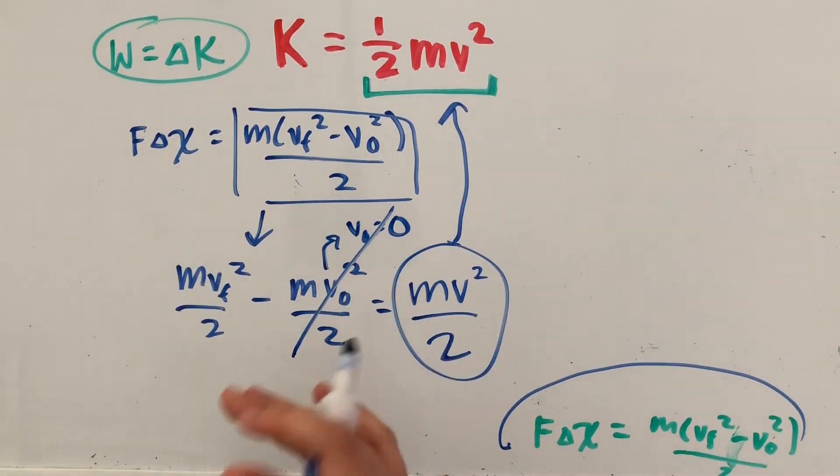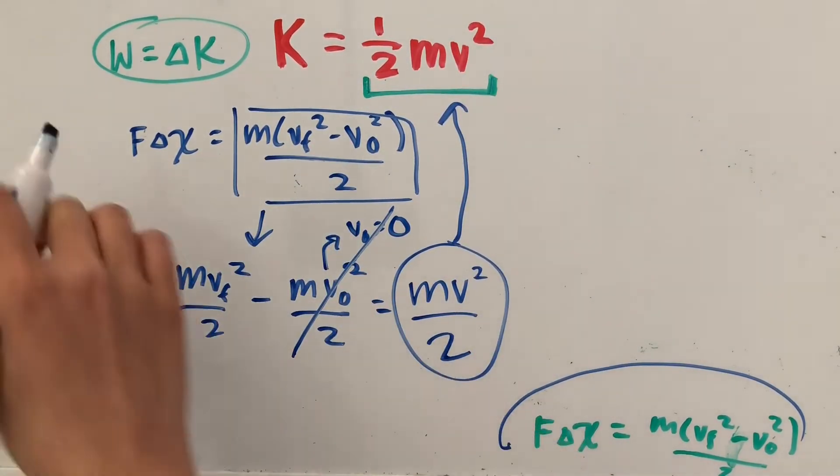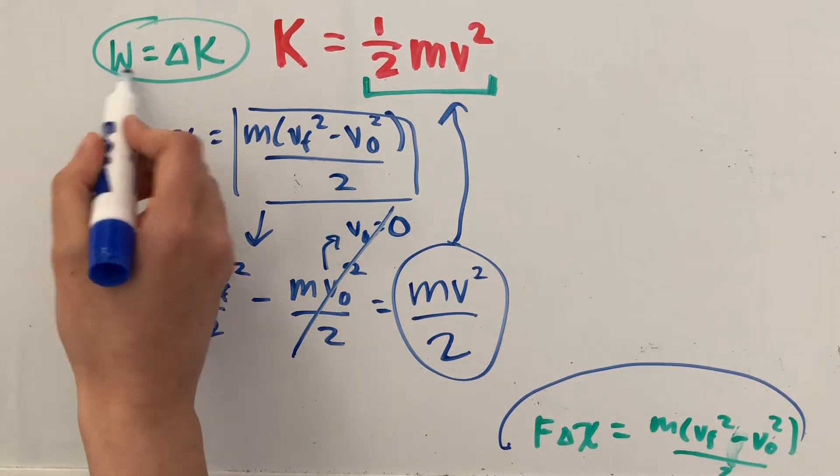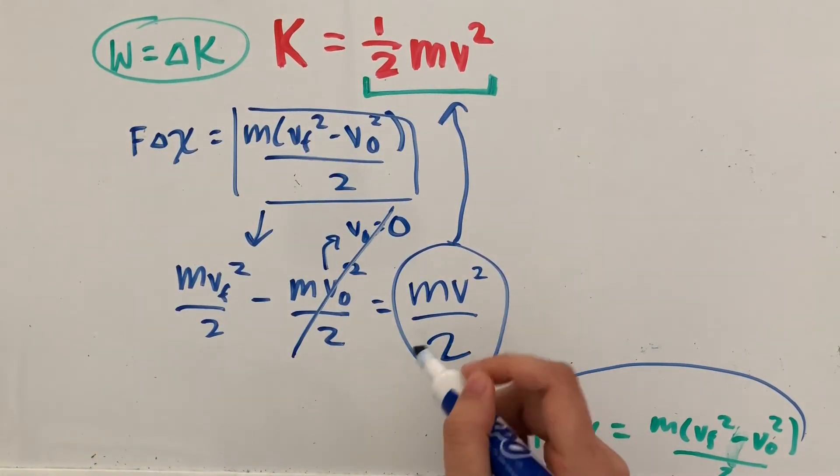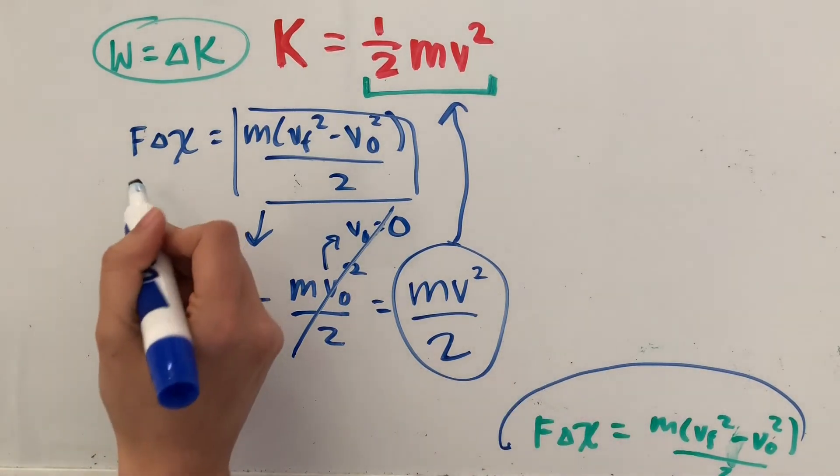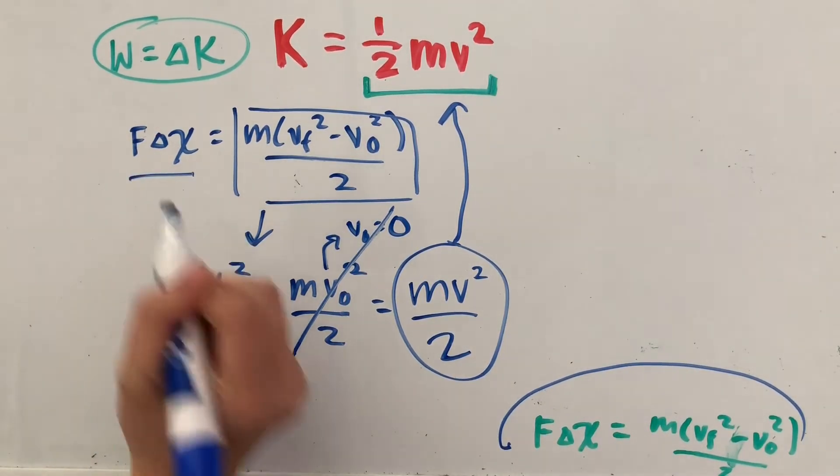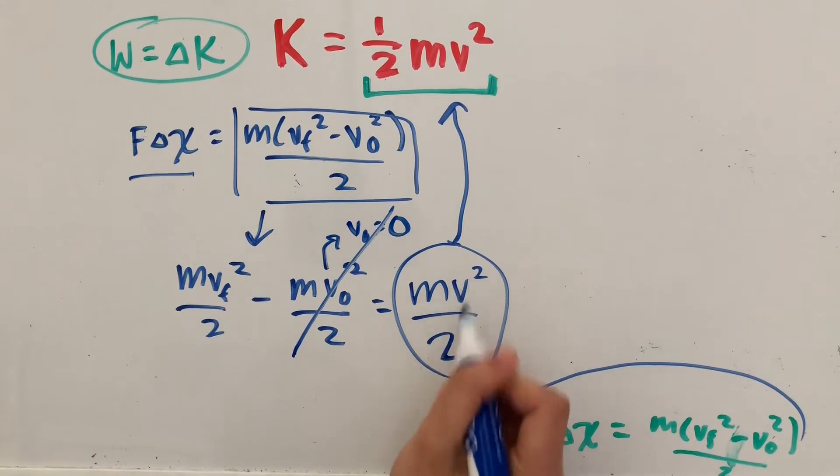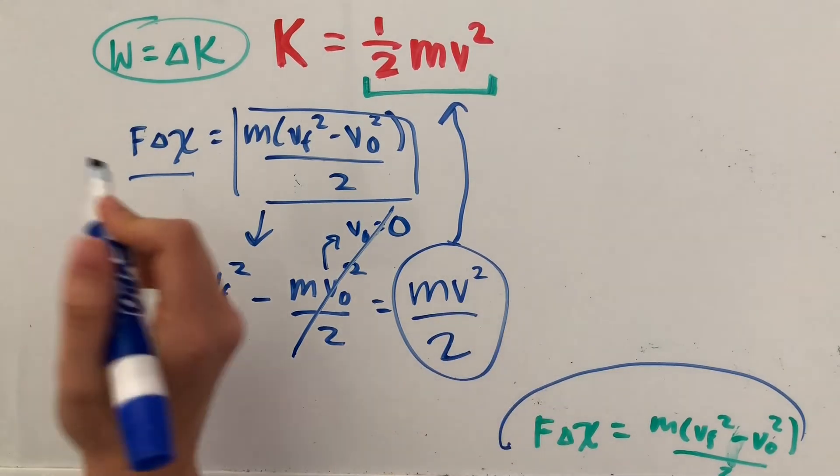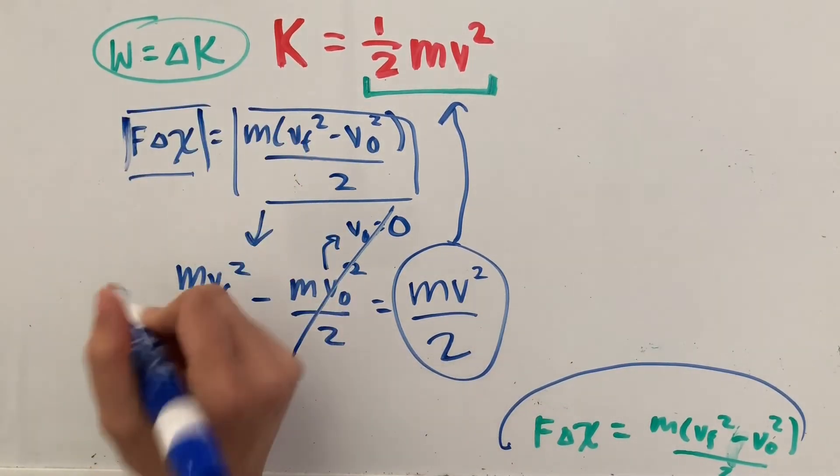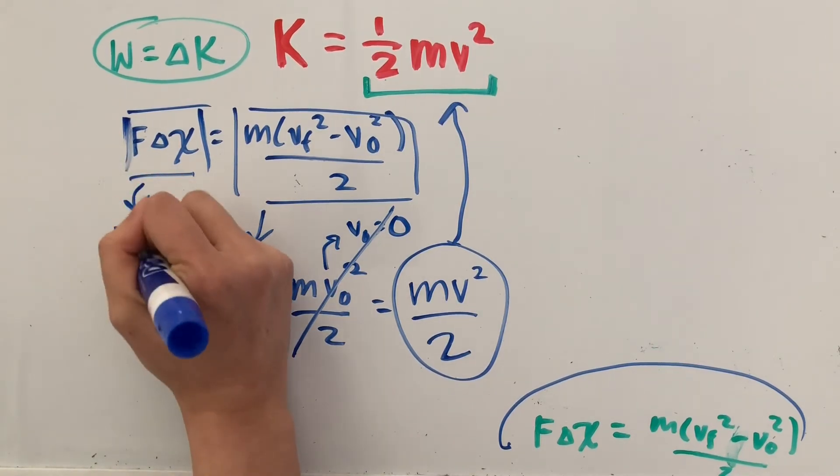Now the final step to pull all of this together is remember that work is equal to the change in kinetic energy. So what we had here is that f delta x is equal to mv squared over 2. And this, f delta x, is actually the equation for work.